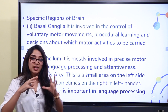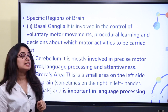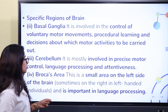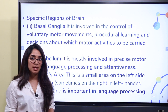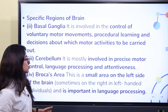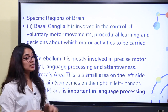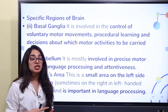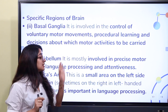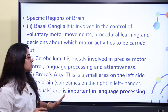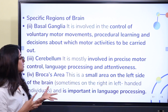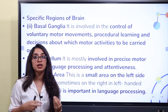The cerebrum is divided into four lobes. The cerebellum is mostly involved in precise motor control, language processing, and attentiveness. Do not confuse the cerebrum with the cerebellum - they are different structures.